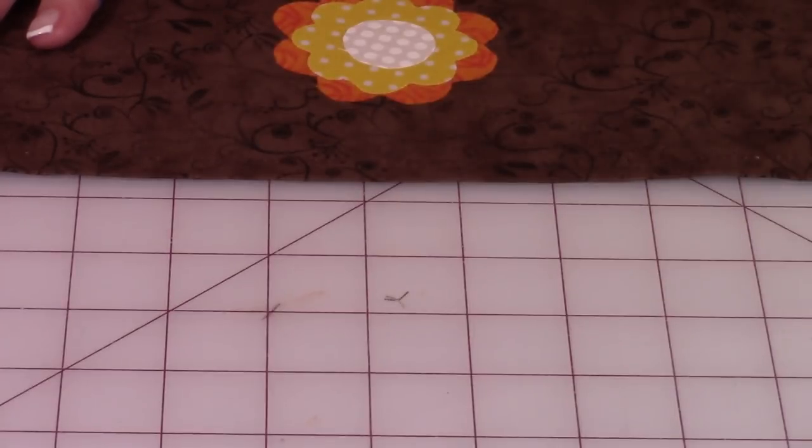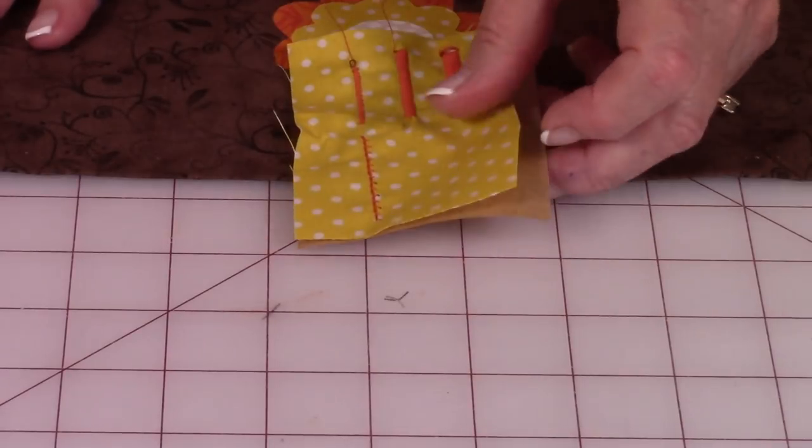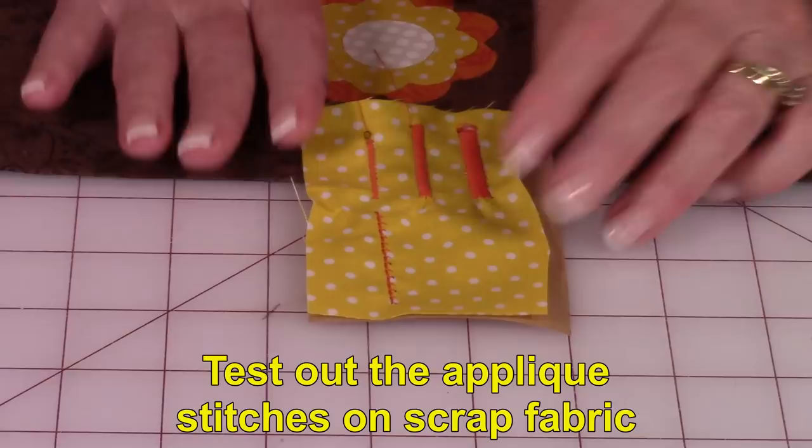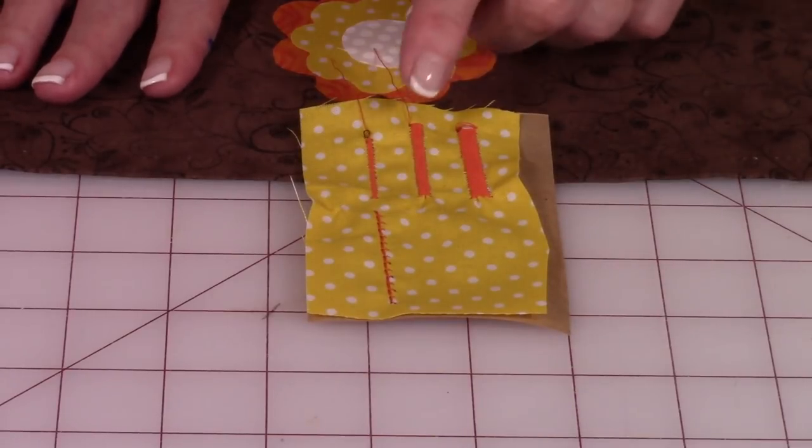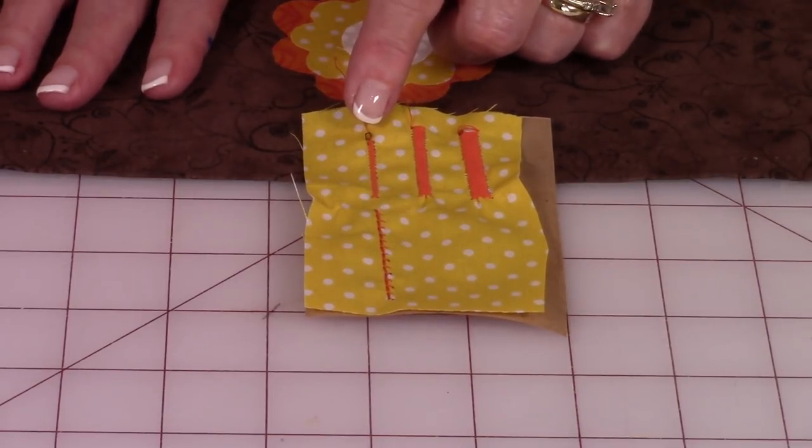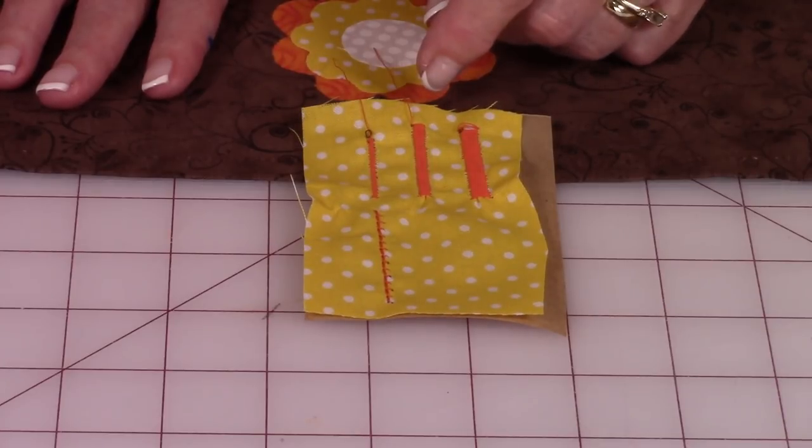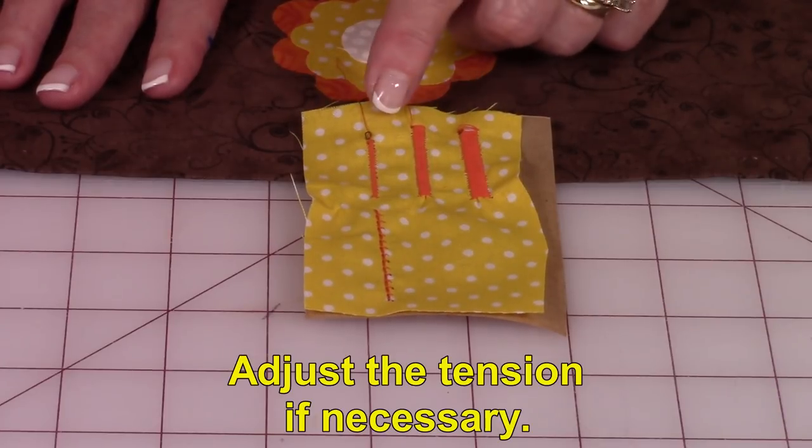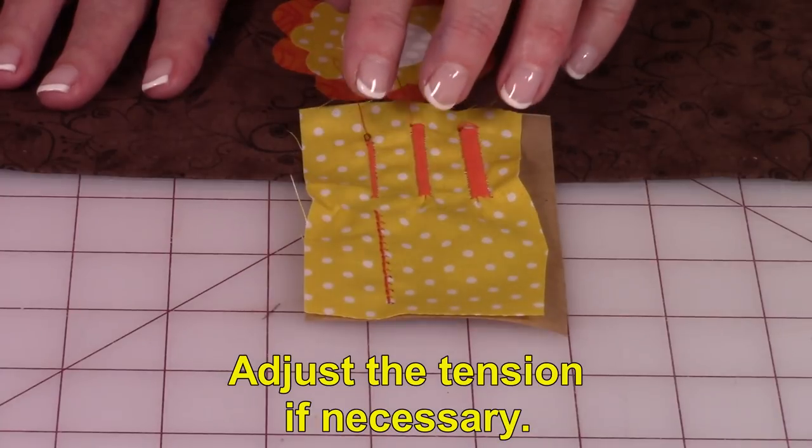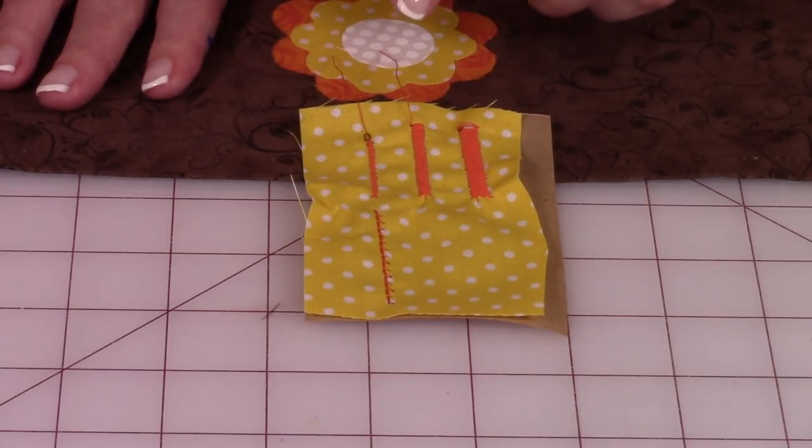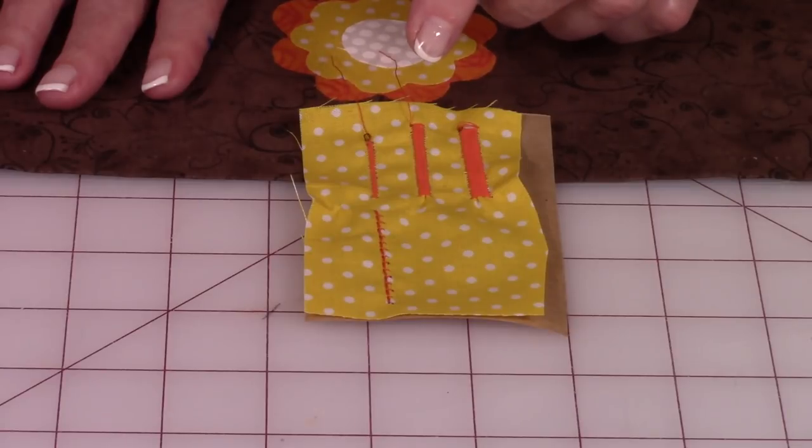When you're doing your applique stitches, look at the stitches on your machine and play around with them. I'm probably going to use this small satin stitch. Also adjust your tension. I have a little tight right here, so it's puckering my fabric. So always test out your stitches on scrap fabrics first.